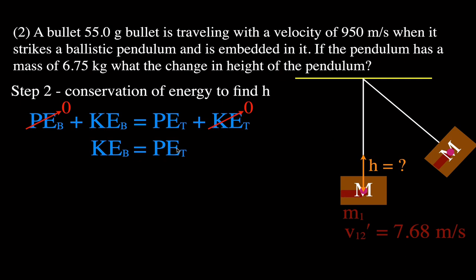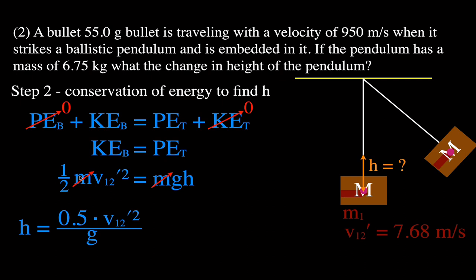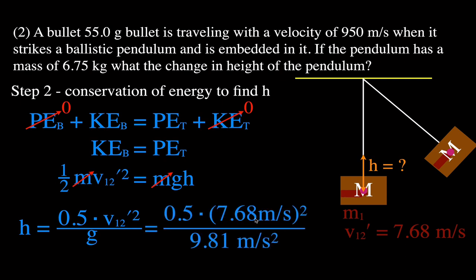We know the combined velocity from the previous step. The masses cancel on both sides, giving us one-half v squared equals gh. Solving for height: h equals one-half v squared divided by g, which is 0.5 times (7.68)² divided by 9.81. We find that the change in height is exactly 3 meters.